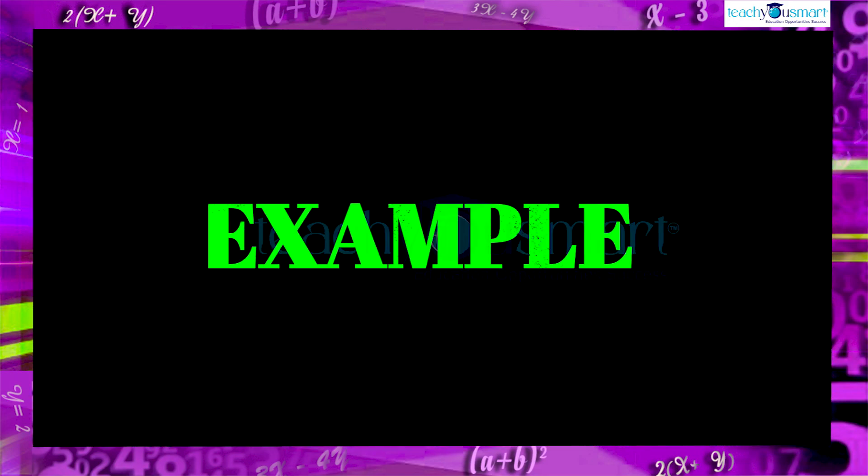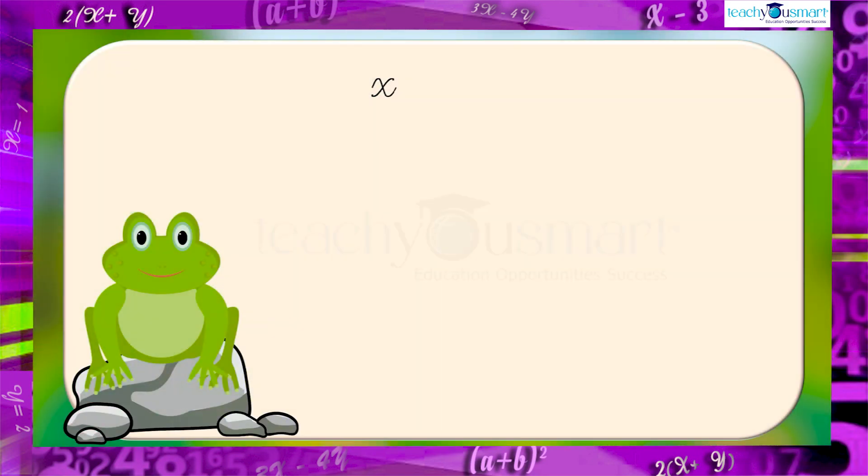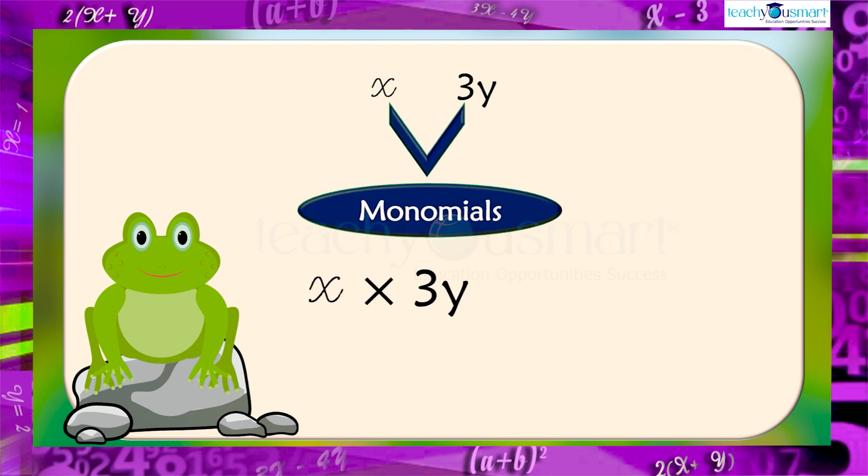Let's do an example. X and 3Y are two monomials. How can it be multiplied? If X multiplied by 3Y, first, write all the numerals, then write the variables and multiply them. That is, the answer is 3XY.